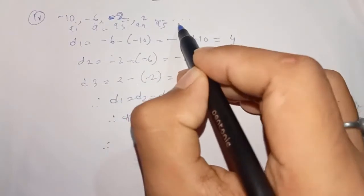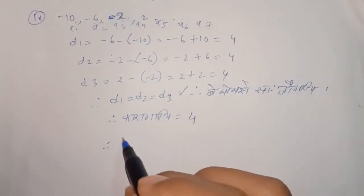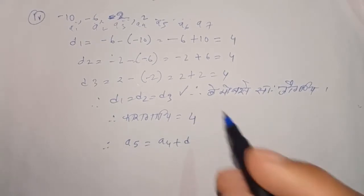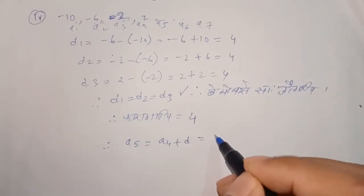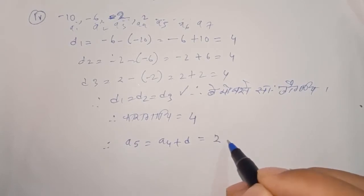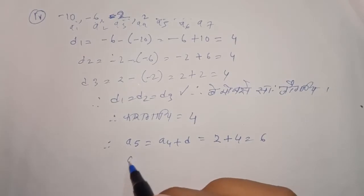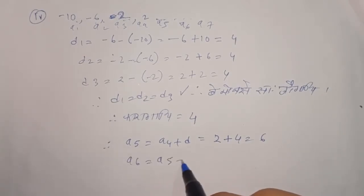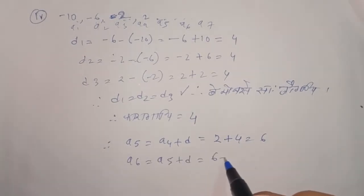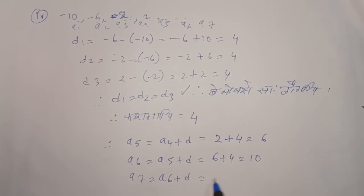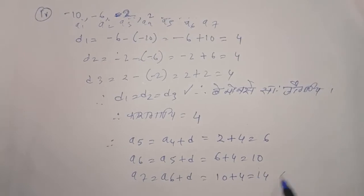A5 equal to A4 plus D. A4 plus D, A4 equals 6. A6 equal to A5 plus D. A5 is 7 and A6 equals 10. A7 equal to A6 plus D. A6 is 10 plus D, A7 equals 14.